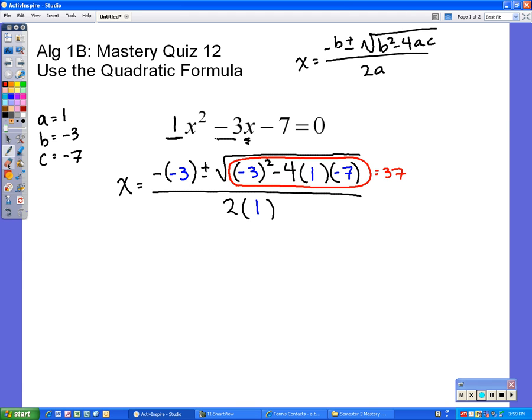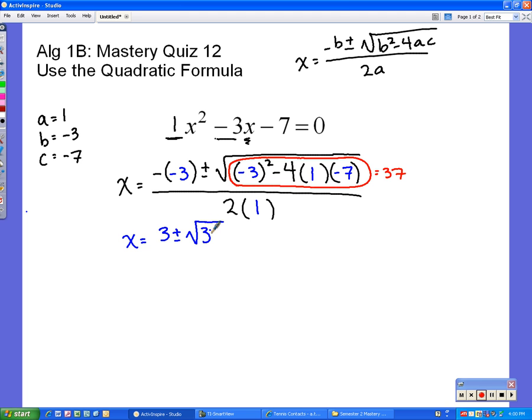So, now I'm going to rewrite what I have. I have x equals the opposite of negative 3 is positive 3. I rewrite my plus or minus. I have to rewrite my square root because, remember, I didn't type it in the calculator, so it's still there. But, I can write it a little bit shorter because I know that all this stuff is the same as 37. So, all I have to write for all that now is 37. And all that is over 2 times 1 which is just 2.